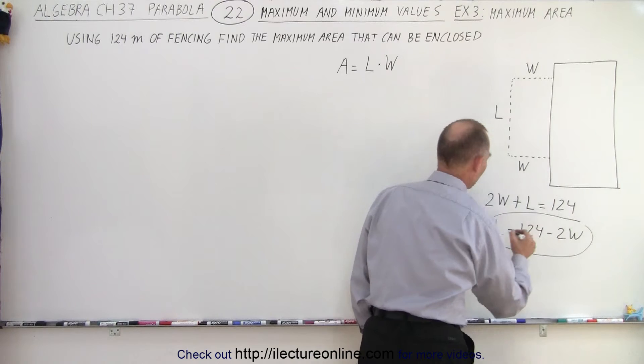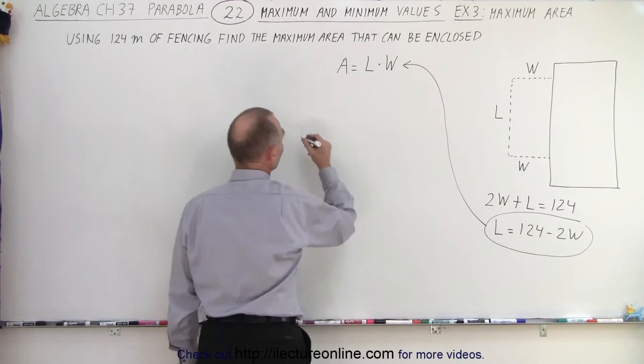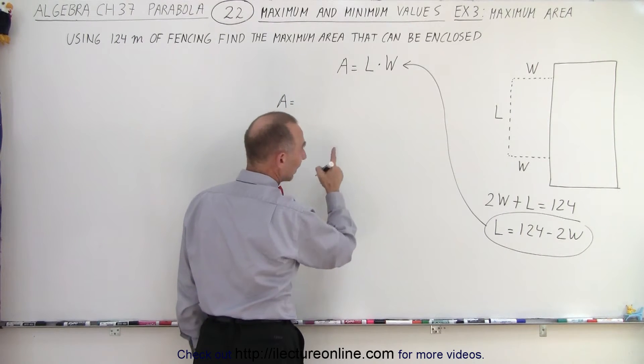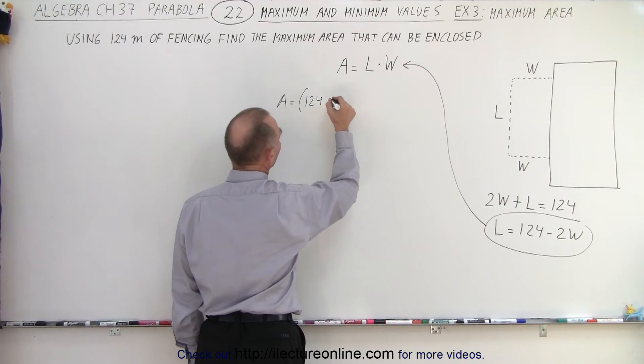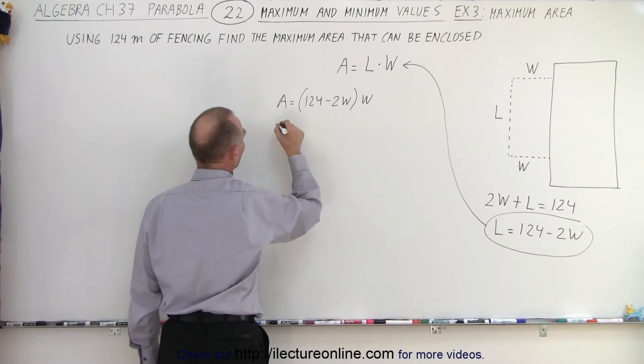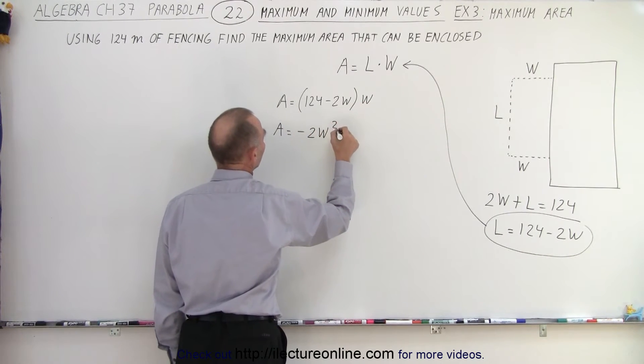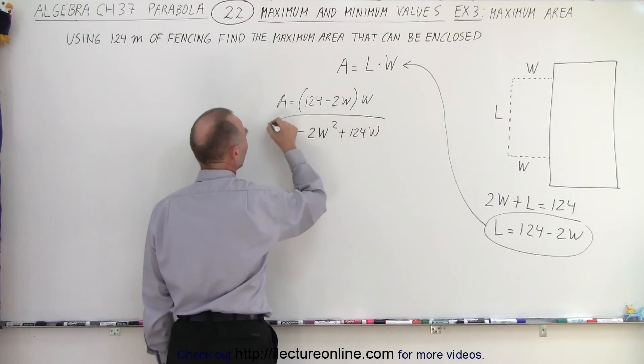And we can take that and substitute that into our equation right here. So when we do that, we get the area is equal to the length, which is 124 minus twice the width, and then we multiply that times the width. So in other words, the area is equal to minus 2 times the width squared plus 124 times the width.